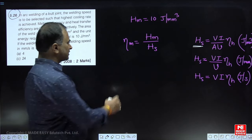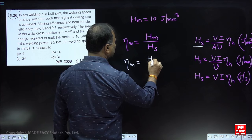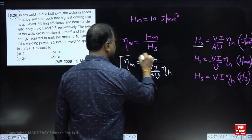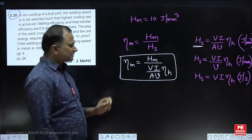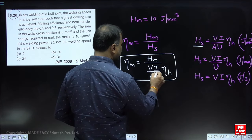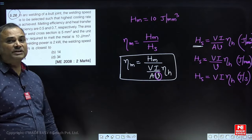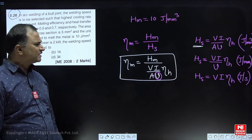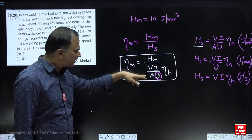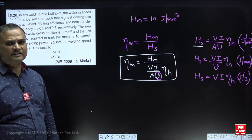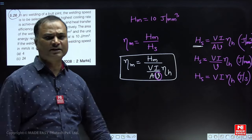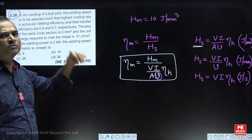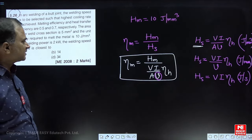From here, melting efficiency equals heat required to melt divided by heat supplied. Heat supplied is V×I divided by area×welding speed, multiplied by heat transfer efficiency. All parameters are given; we only need to calculate welding speed. Melting efficiency is 0.5, heat required to melt is 10 J/mm³, power is 2×10³ W, area is 5 mm², and heat transfer efficiency is 0.7.